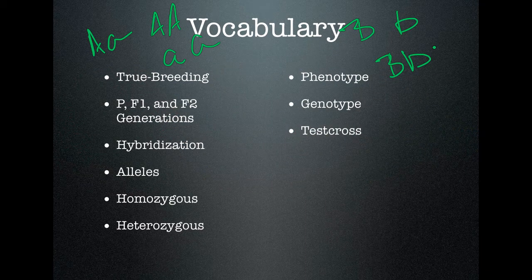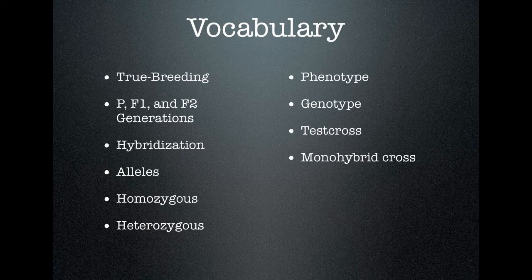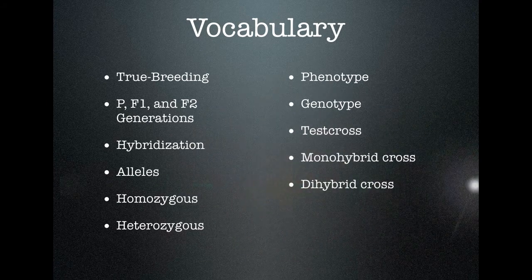A test cross is conducted when we need to find out the genotype of an unknown organism. Test crosses are used to identify a genotype without doing any genetic tests. A monohybrid cross is a cross between two organisms where you are tracking one trait — such as the color of peas, the height of the plant, or the shape of the pea pods. If you are tracking two traits, it's a dihybrid cross — you might be tracking both pea color and pea shape, or flower color and plant height.